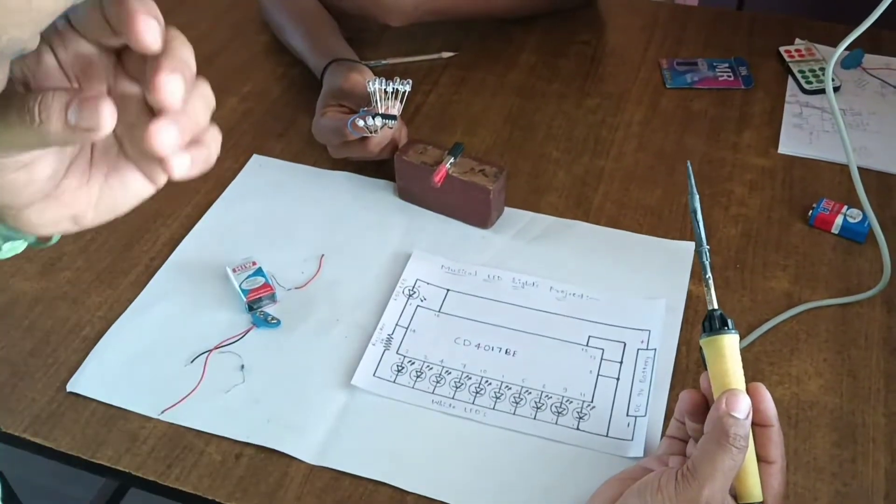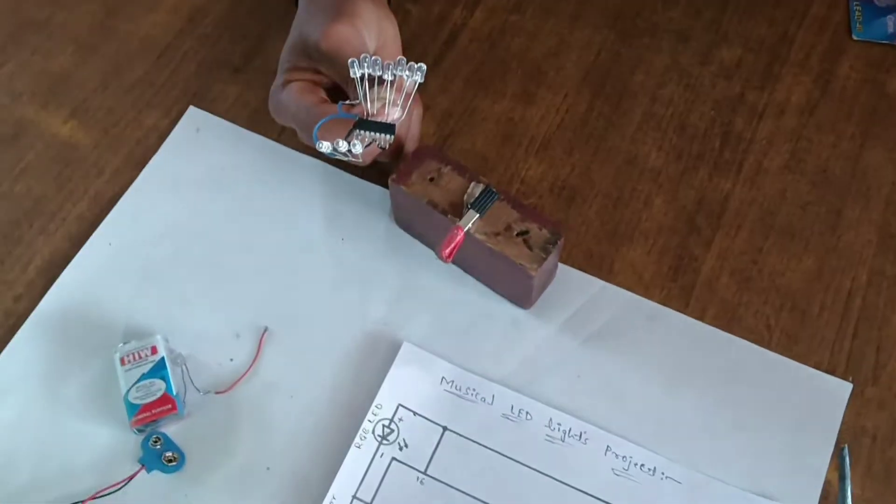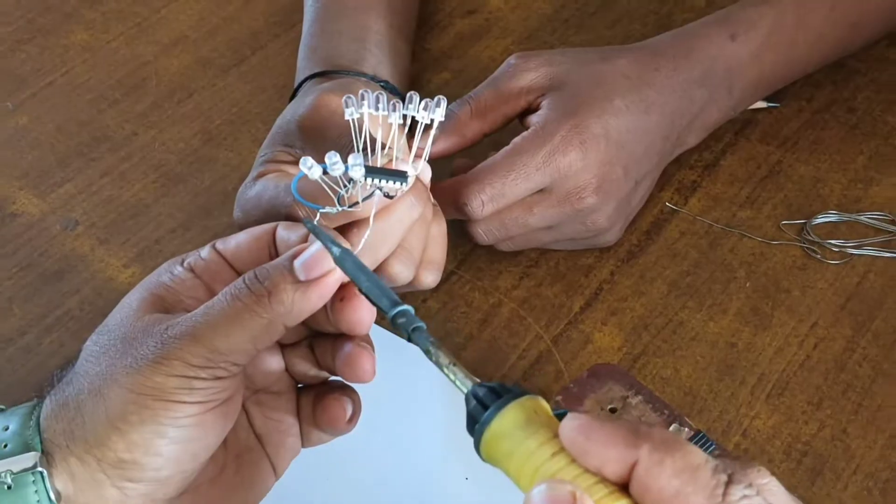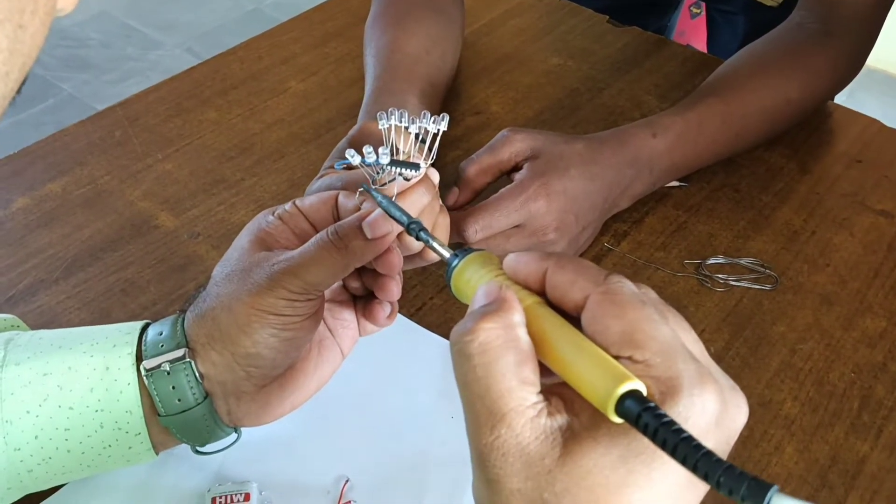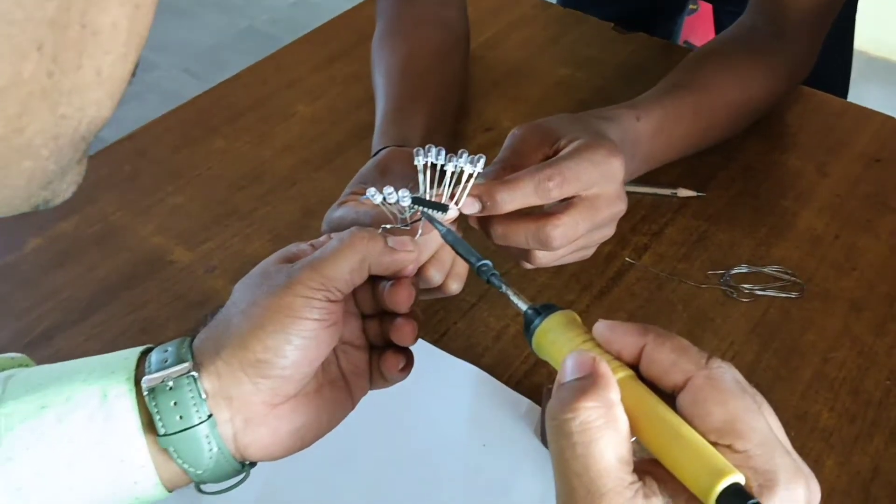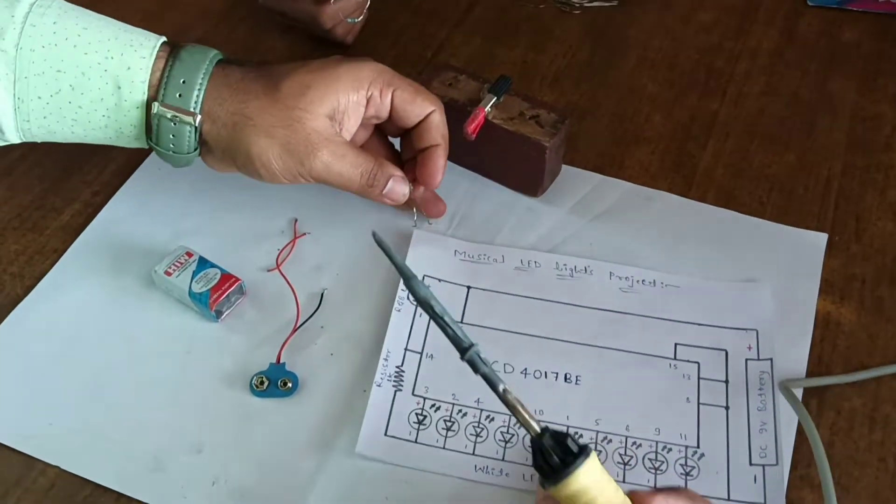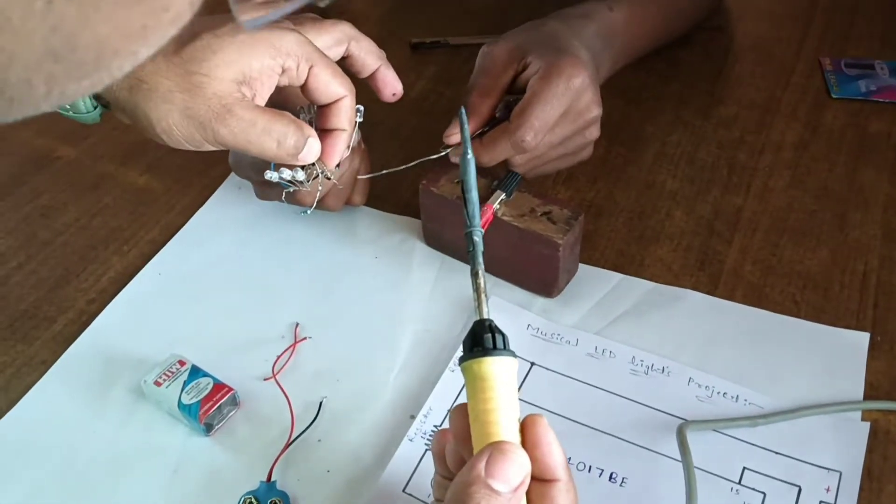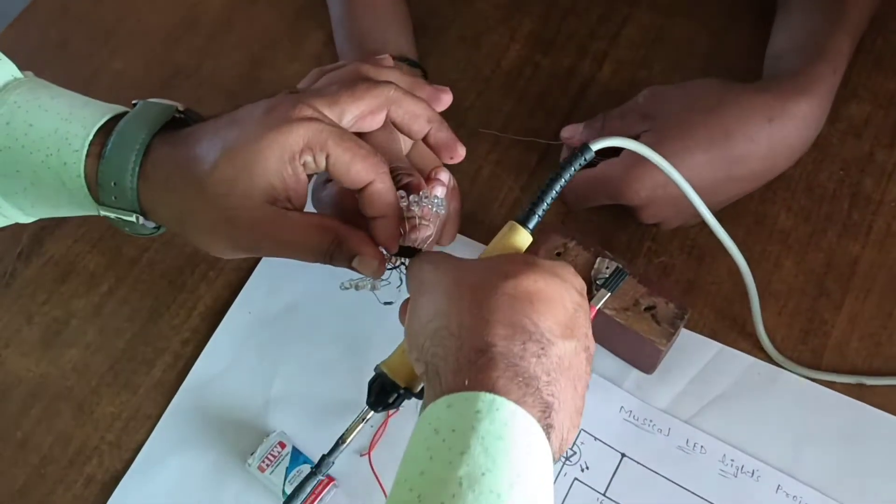This connection is over, let's take next connection. Next connection is pin 15 negative to pin number 14. Next pin number 14 to RGB positive is given to pin number 16.